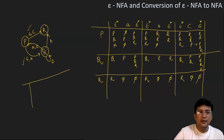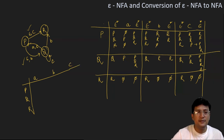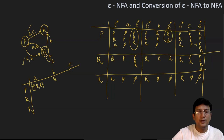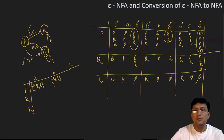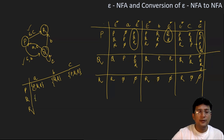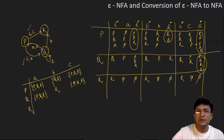Now let's draw the NFA table. The states are p, q, and r, and the symbols for transitions are a, b, and c. p on getting symbol a moves to {p, q, r}. p on getting symbol b moves to {q, r}. p on getting symbol c will take the union of all, which will be {p, q, r}. For q with a, it moves to {p, q, r}. q with b moves to state r only. With symbol c, it moves to {p, q, r}. r on a, r on b, and r on c are all undefined. This is the transition table for the NFA.